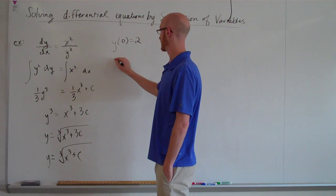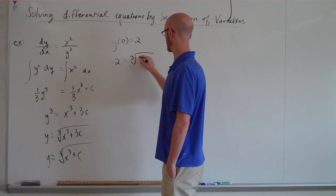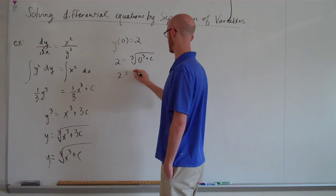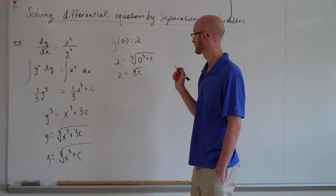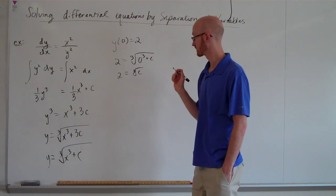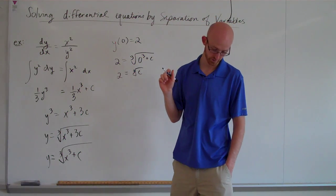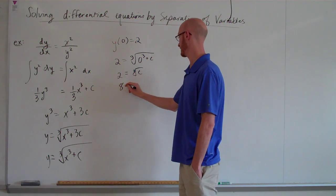But if we know y of 0 equals 2, we can substitute 0 in here. So 2 equals the cube root of 0 cubed plus c. So 2 equals the cube root of c. So 8 is c.